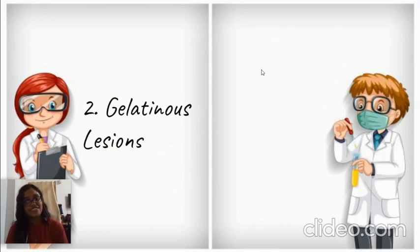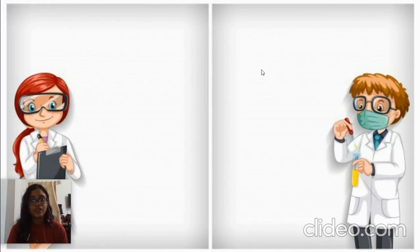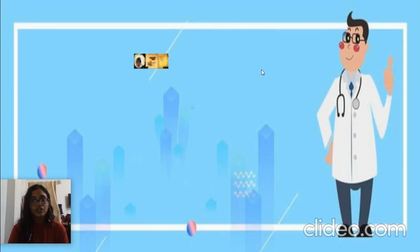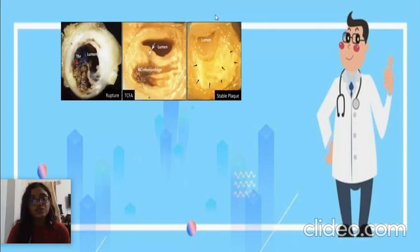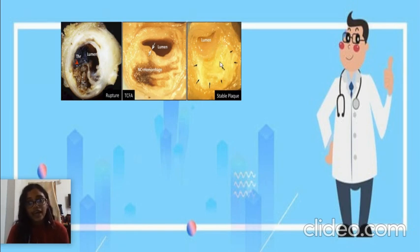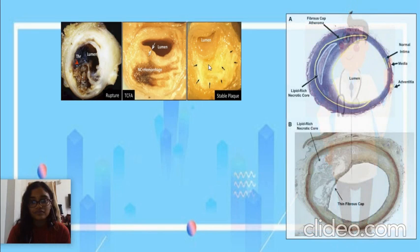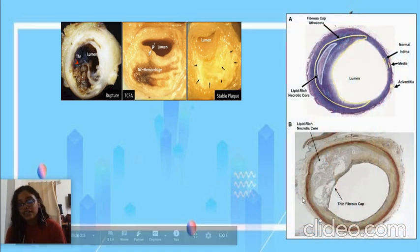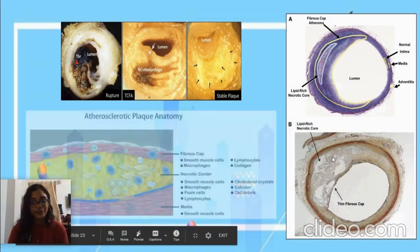Next we have gelatinous lesions, which are grey lesions found grossly. The third and most important one is the atheromatous plaque. This is how an atherosclerotic plaque looks grossly — as you can see here, the luminal surface has a fibrous cap and the inner necrotic core has a porridge-like material, known as atheroma. Microscopically, it contains the same components: the fibrous cap and a lipid-rich necrotic core.